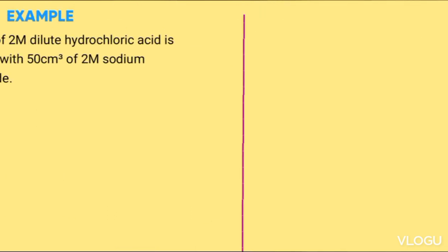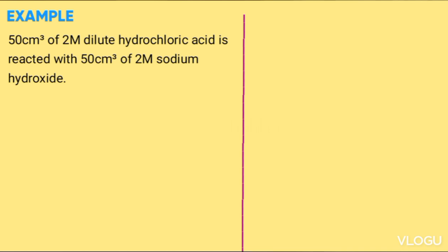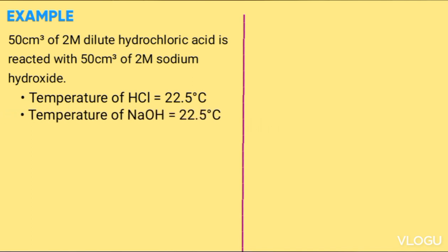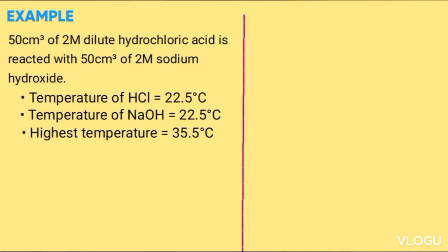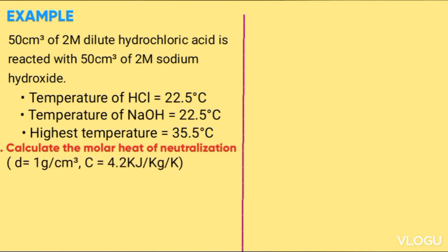Example: 50 cm³ of 2 molar diluted hydrochloric acid is reacted with 50 cm³ of 2 molar sodium hydroxide solution. Use the information below to answer the question. Temperature of the hydrochloric acid: 22.5°C. Temperature of sodium hydroxide: 22.5°C. Highest temperature of the mixture: 35.5°C. Density is 1 g/cm³, C is 4.2 kJ/kg/K.